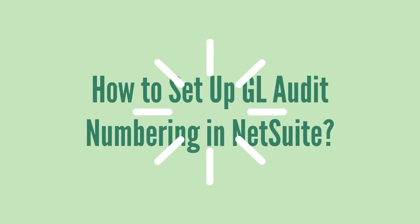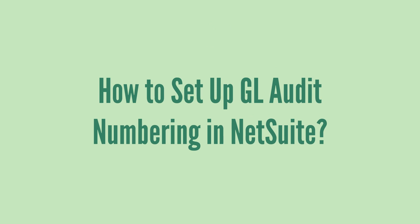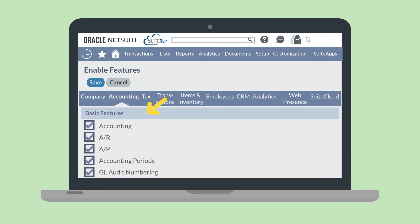Getting the GL audit numbering feature set up in NetSuite takes just a bit of prep work. First, you'll need to enable the feature. You can enable this feature on the basic features section of the accounting tab in Enable Features. The accounting periods feature on this tab should also be enabled.